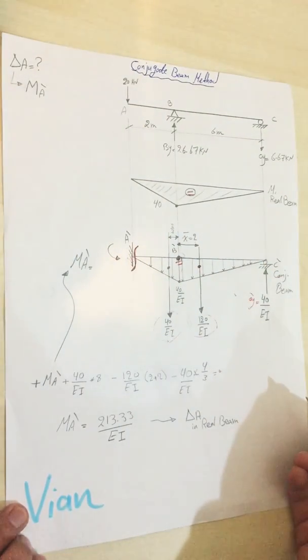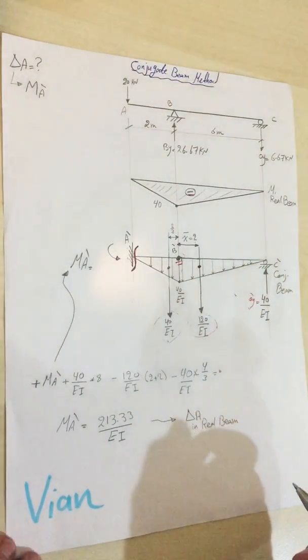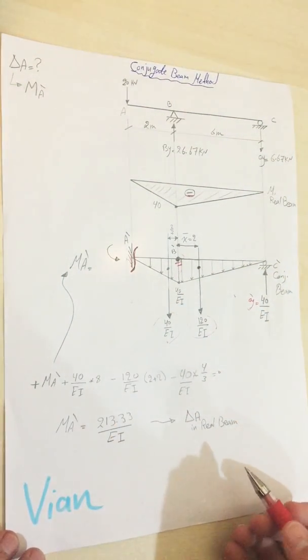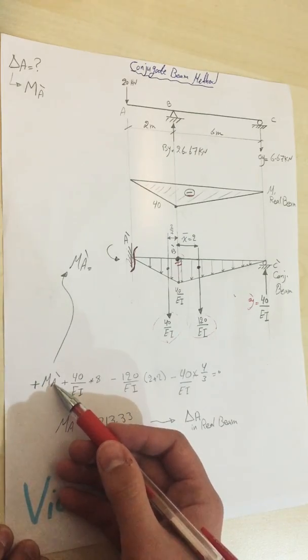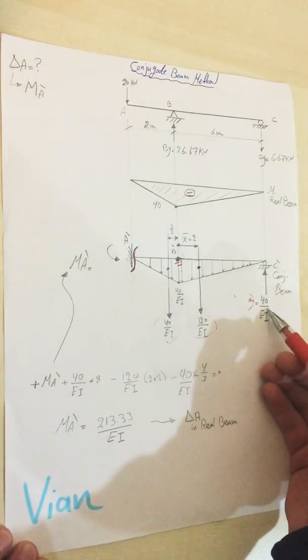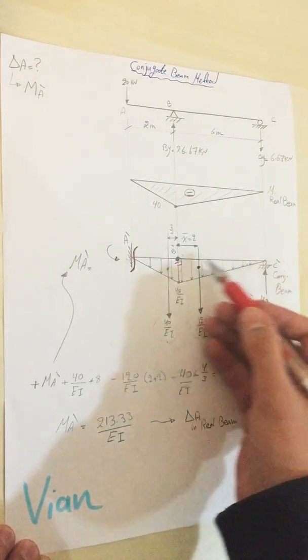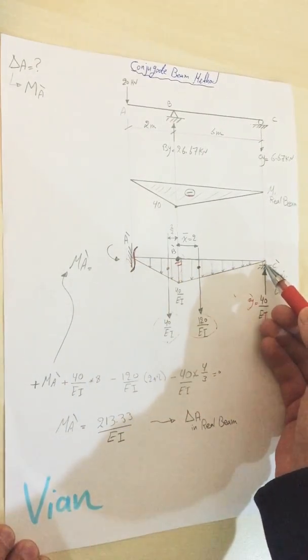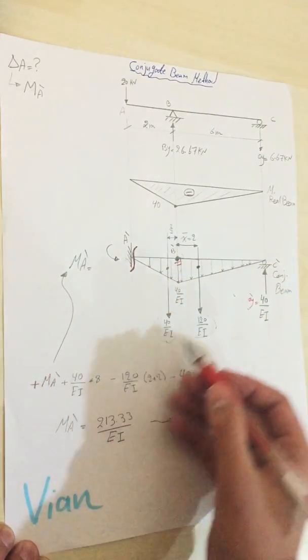It's okay, you can assume it at the other side—it will be negative and then you have to change it or leave it as it is. It doesn't matter. So a positive sign, moment at A dash, plus 40 divided by EI times 8, which is the distance from this point until here, minus 120 divided by EI times this distance which is 2.